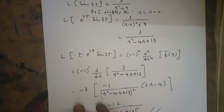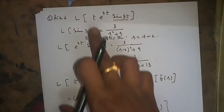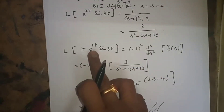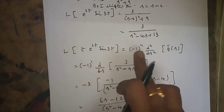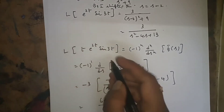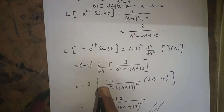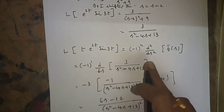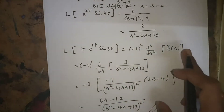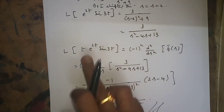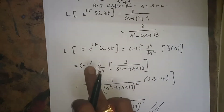Now coming to the full problem: L{t · e^(2t) · sin(3t)}. Since there is multiplication by t, we apply the multiplication by t^n formula: (-1)^n · d^n/ds^n · F̄(s). Here n = 1, so it becomes (-1)^1 · d/ds of the whole expression.